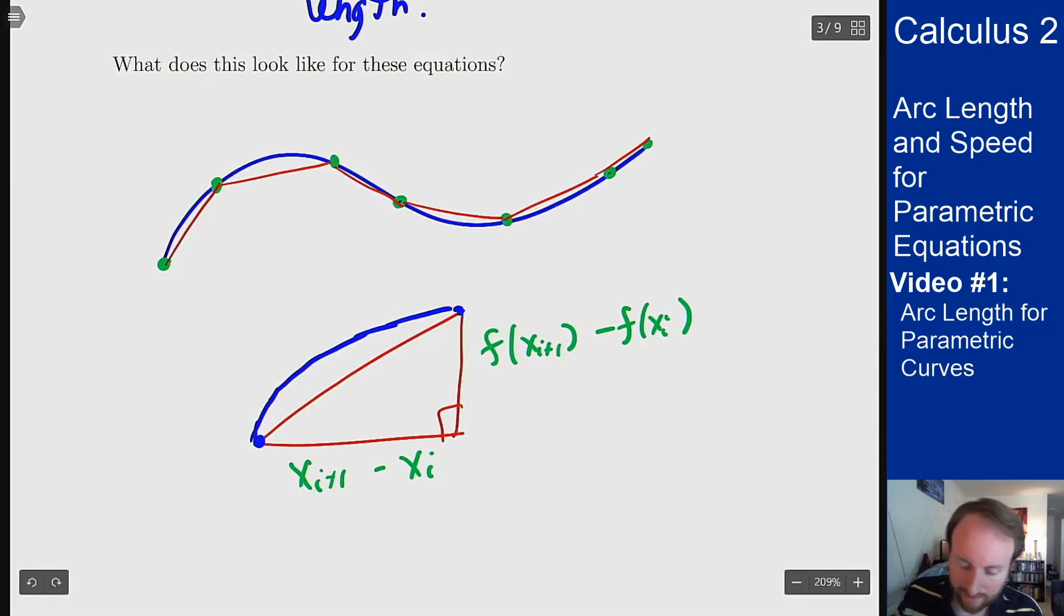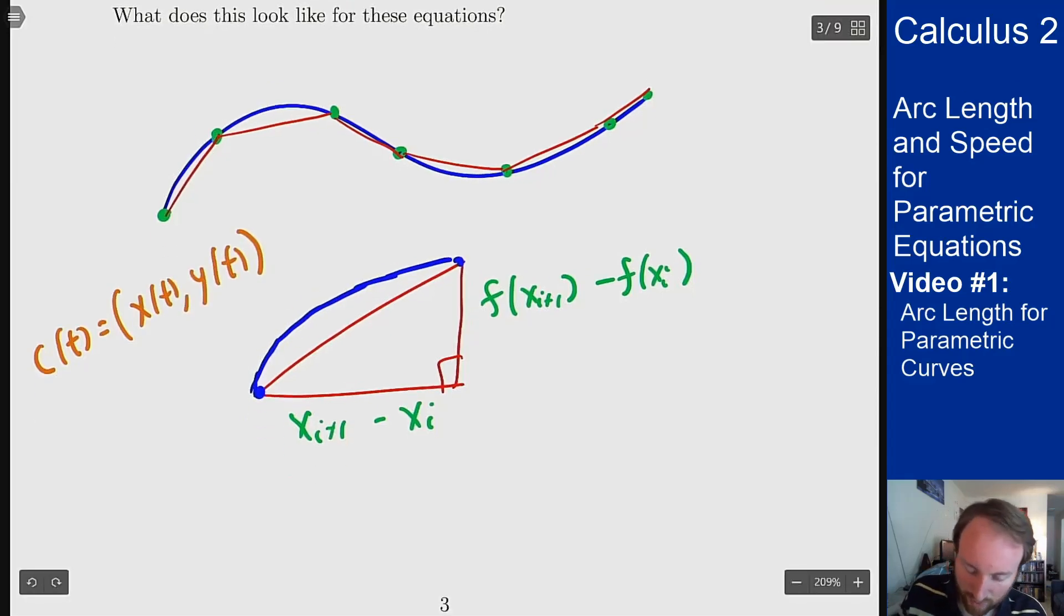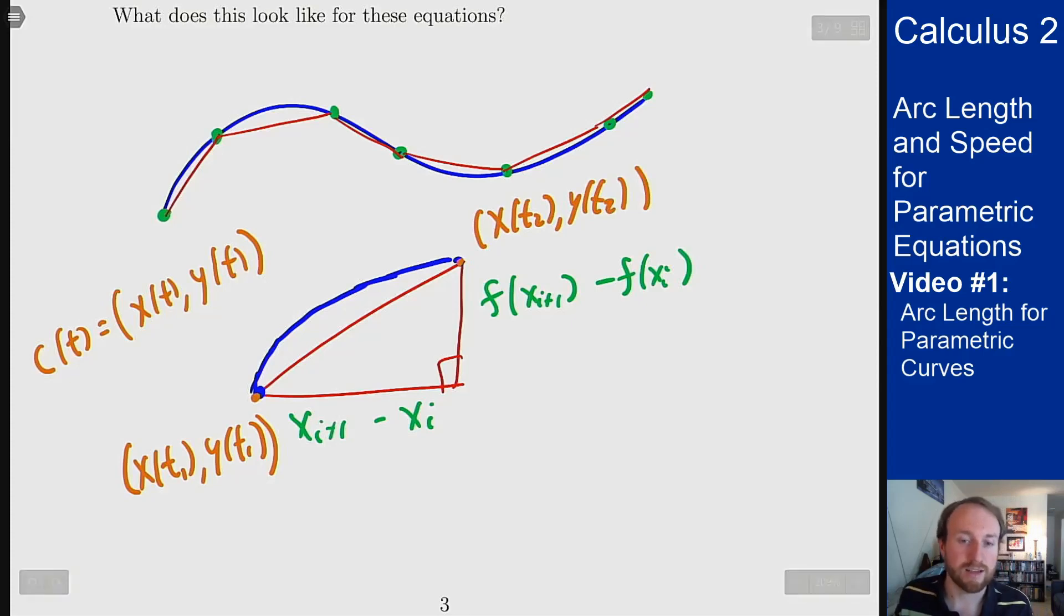But now what's the difference now that we have these parametric equations? Well now my curve is defined in terms of t values and I have x of t for the x coordinate and y of t for the y coordinate. So what that means is the point down here is at x of say t_1, y of t_1 and the point up top is at x of t_2, y of t_2. Assume we're going from t_1 to t_2, you could use t_i and t_{i+1} if you wanted to make it more general.